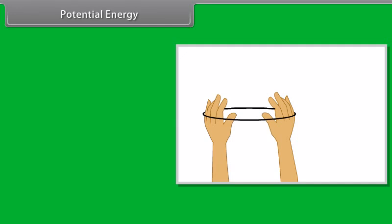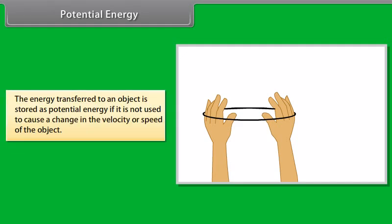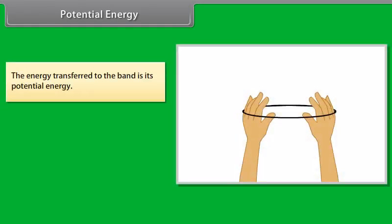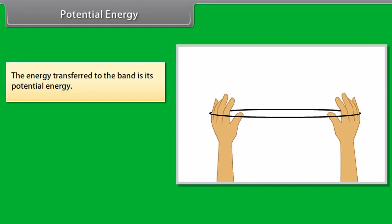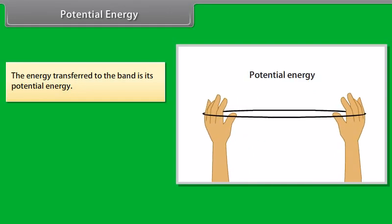The energy transferred to an object is stored as potential energy if it is not used to cause a change in the velocity or speed of the object. We transfer energy when we stretch a rubber band; the energy transferred to the band is its potential energy. The potential energy possessed by the object is the energy present in it by virtue of its position or configuration.